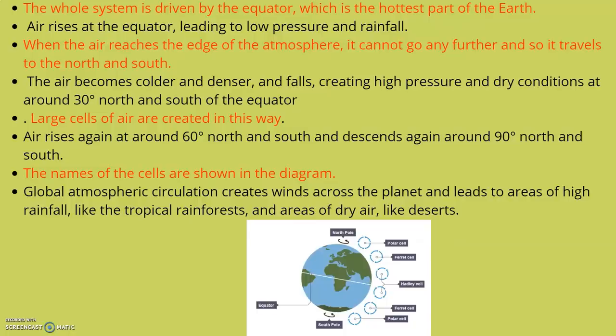So it travels north and south. The air becomes colder and denser and then falls, creating high pressure and dry conditions at 30 degrees north and south of the equator. Why does this air become colder and denser? Because it's no longer at the equator. Large cells of air are created in this way—hot air rises at the equator, moves out, then drops back down as the equator's solar radiation is no longer there.